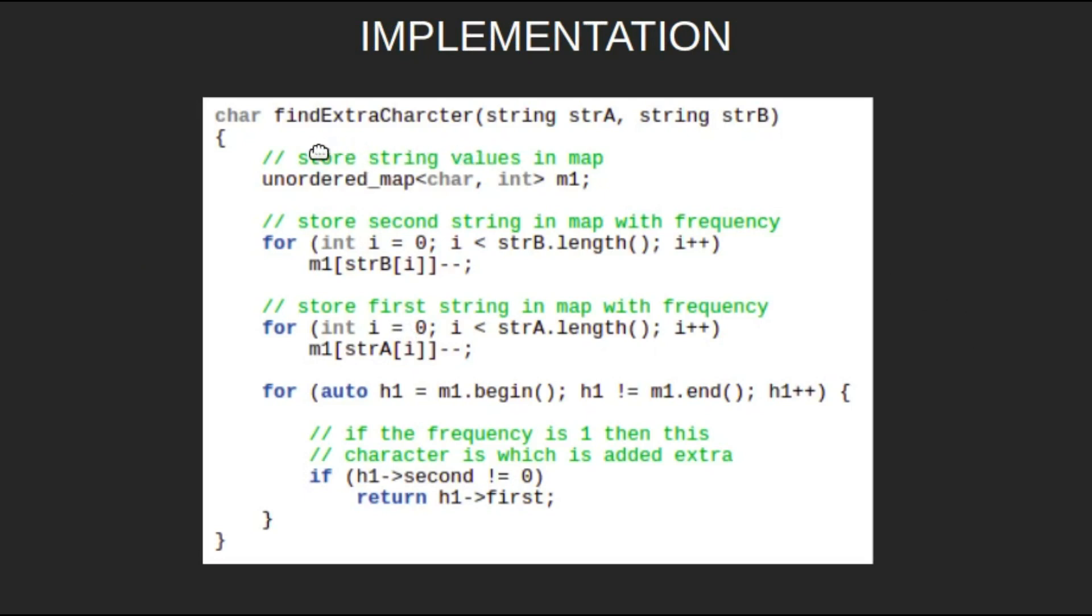First we will initialize a hash map whose key will be the char and the value will be an int, that is the count of the char. Then we will start a loop which will store all the chars from string two along with their frequency in hash map m1.